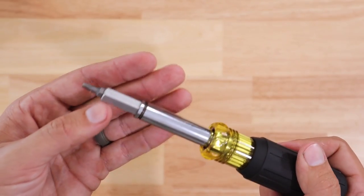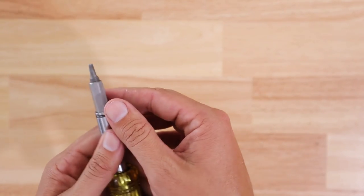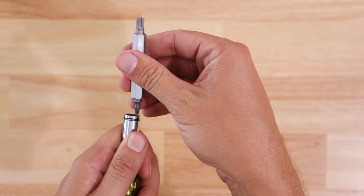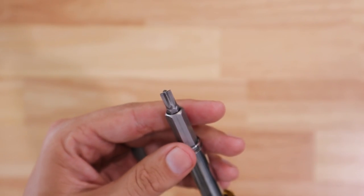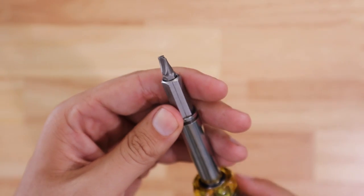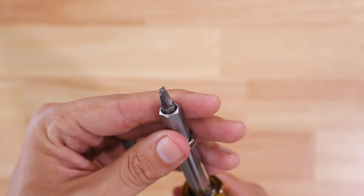So all of this brings me to my final option. And in my opinion, the best option. If I just take this bit out, and I flip it over, that brings me to this bit right here. This particular bit is made by Klein, and it's more of a hybrid bit. They call it a combination bit.